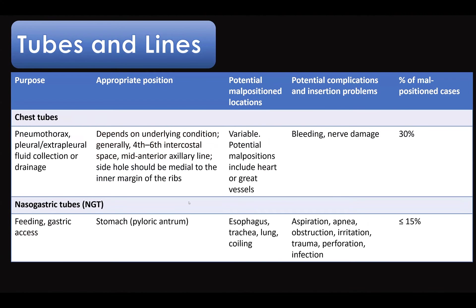For chest tubes, used in pneumothorax or effusion, the correct position is in the mid-anterior axillary line between the 4th and 6th intercostal space. The side holes of the tube should be medial to the inner margins of the ribs — this is very crucial. Malposition can occur into the mediastinum or cross to the other side, causing serious injuries to the heart and great vessels. Complications include bleeding or nerve damage.